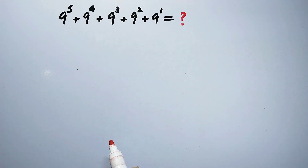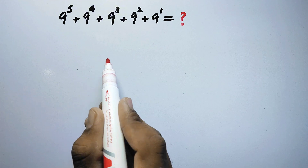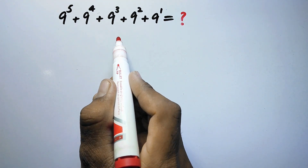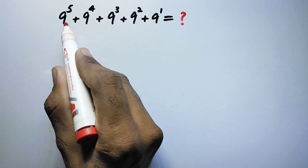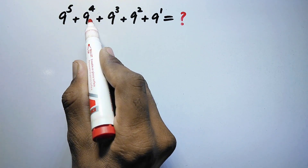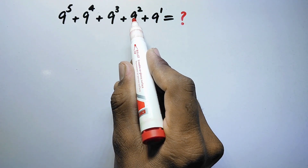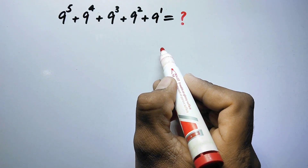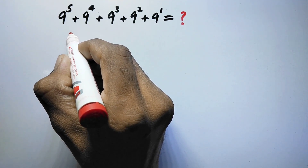Hello everyone and welcome to ExplodeMaths. In this video we are going to make a very nice exponential simplification: 9 to the power 5 plus 9 to the power 4 plus 9 to the power 3 plus 9 to the power 2 plus 9 to the power 1 is equal to what? So let us see its simplification.